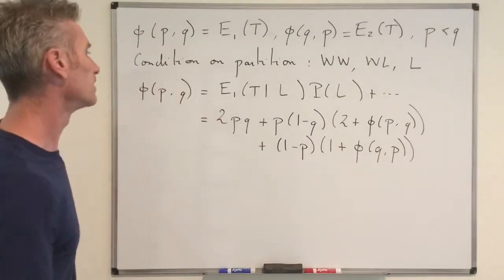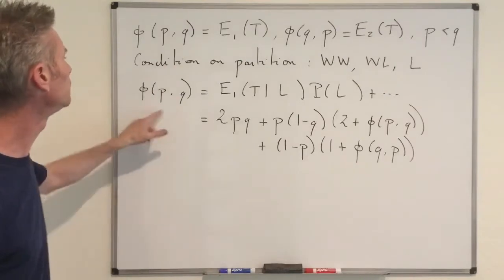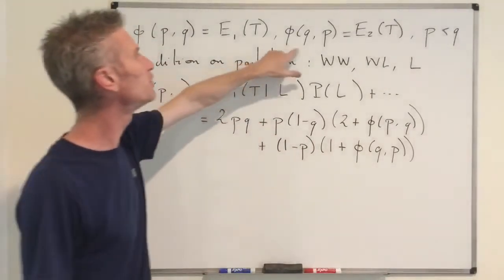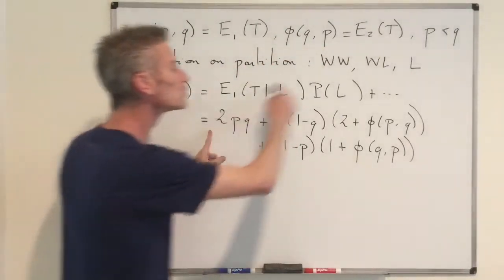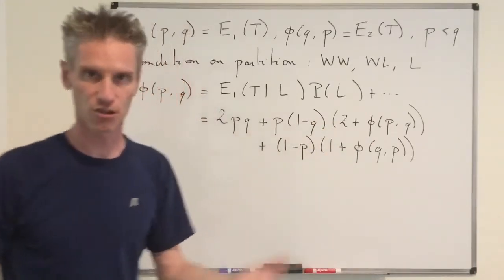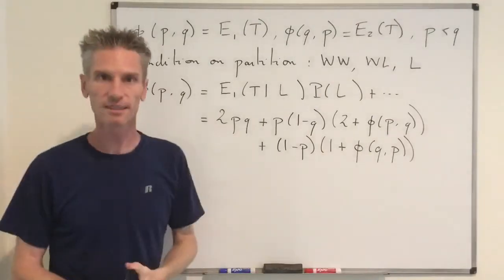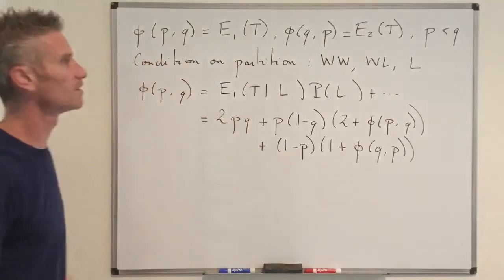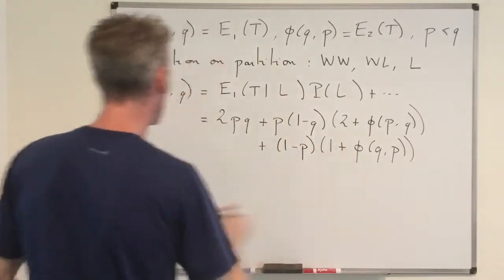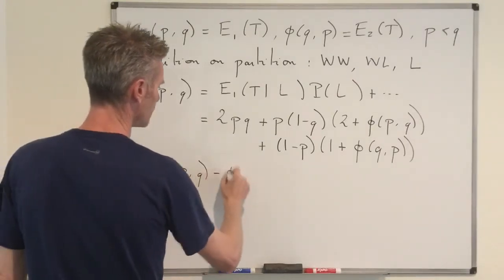Now we have a relationship between φ(P,Q) and φ(Q,P). By symmetry, φ(Q,P) should be equal to the same expression as what we found for φ(P,Q) but exchanging the roles of P and Q. We are going to use this symmetry to estimate a natural quantity: since we want to compare the two functions and see which is larger, let's look at A = φ(P,Q) - φ(Q,P).